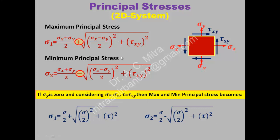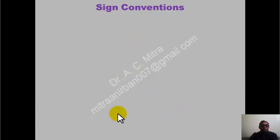Whenever sigma x, sigma y, and tau xy are given, use the basic formula to find sigma 1 and sigma 2. If only one normal stress sigma and one shear stress tau are given, then use the simplified formula. Now we check the sign convention of sigma x and sigma y — let us understand the sign convention, which is very important.